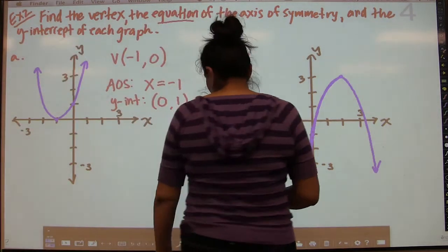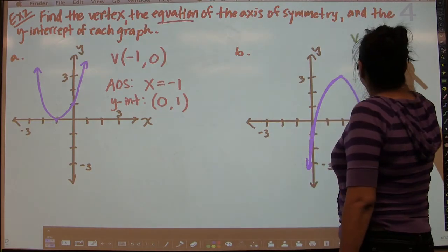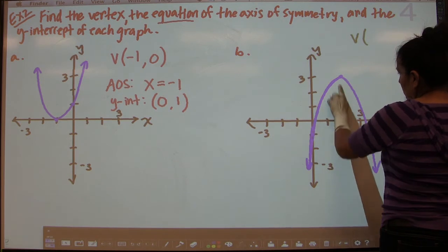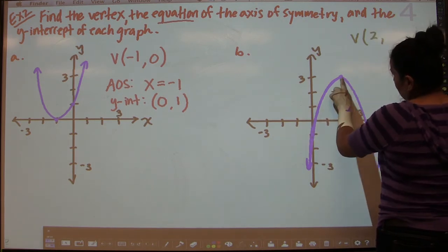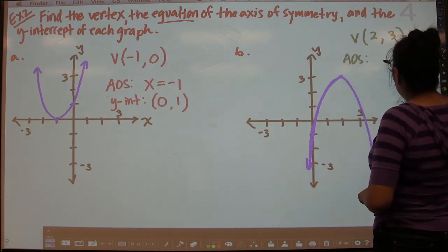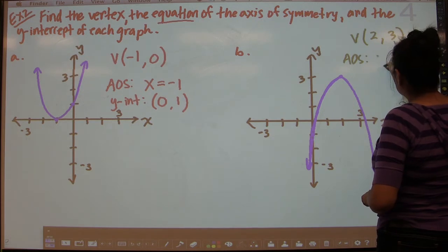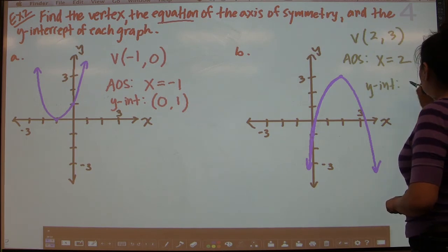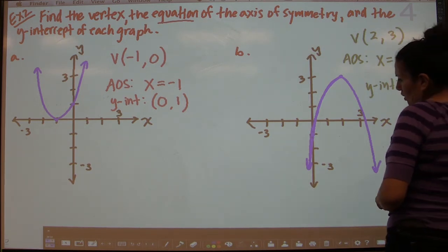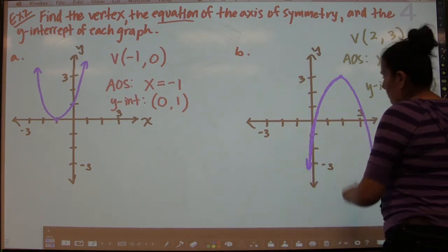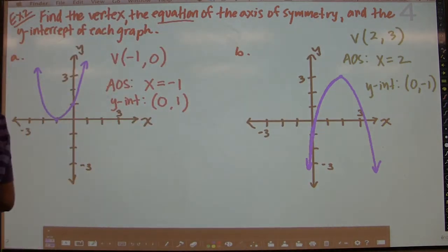For part B, the parabola is upside down. The vertex — the highest point — is at (2, 3). The axis of symmetry is x = 2, the same as the x-coordinate of the vertex. The y-intercept is where it crosses the y-axis: the x-coordinate is 0 and the y-coordinate is −1, so the y-intercept is (0, −1).